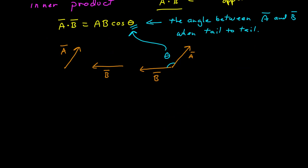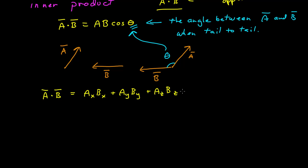Another way is if the components are known: we can calculate the dot product by the x component of a times the x component of b, plus the y component of a times the y component of b. And then if we have a z component, this becomes an easy way to calculate it if we know the component form.